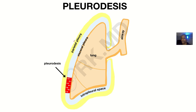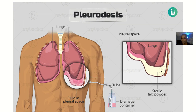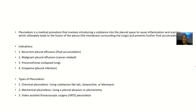Pleurodesis works by targeting the space around the lungs where fluid can gather. You're not trying to initiate something — you are introducing a substance, shown here as the white thing, into the pleural cavity to block that space, seen here as the purple area, so that fluid will not have any chance to accumulate again.